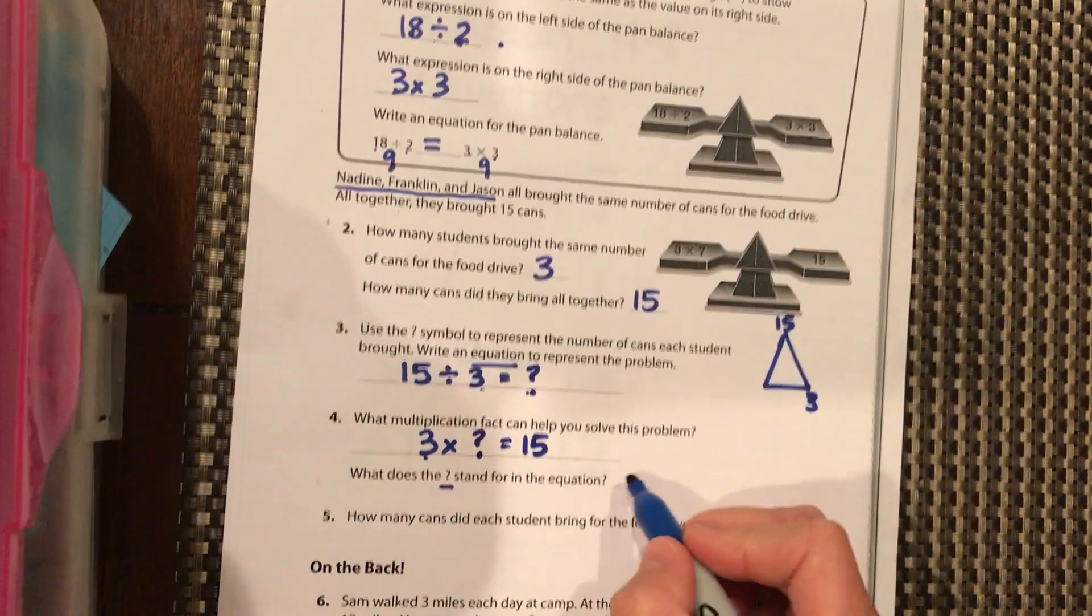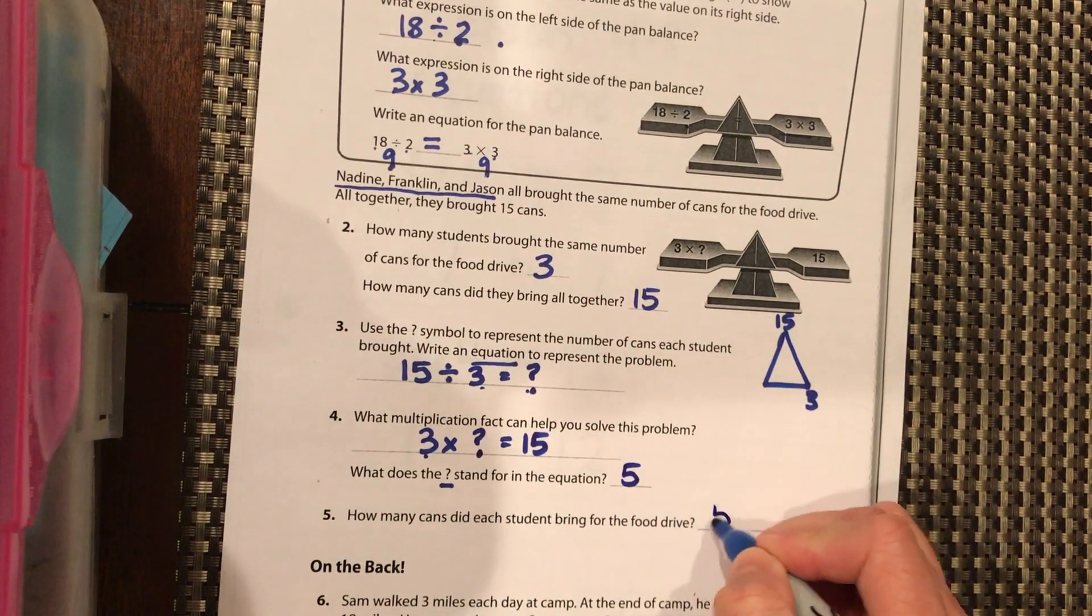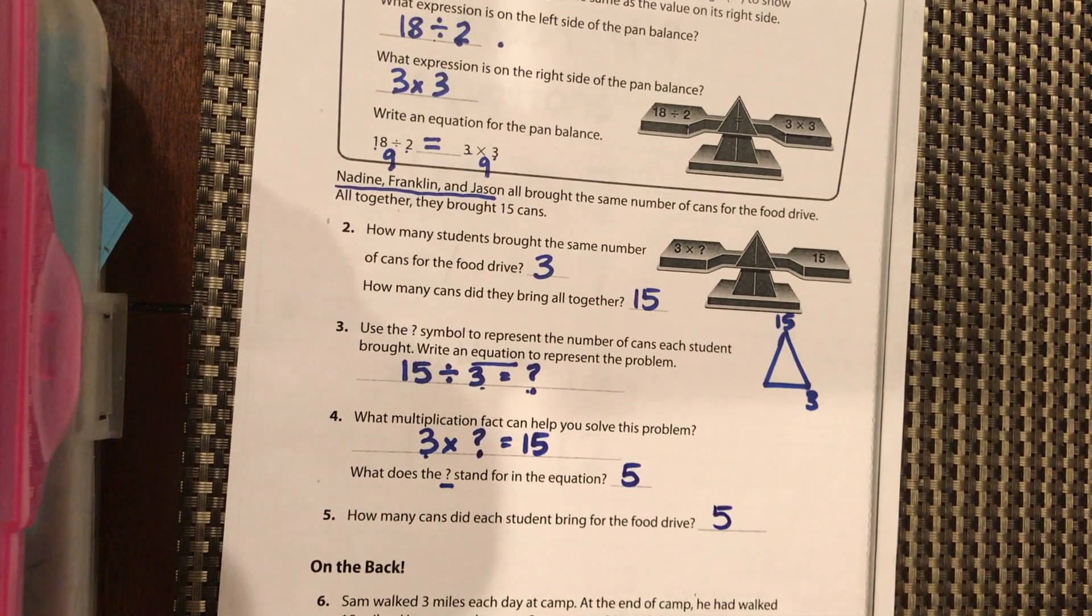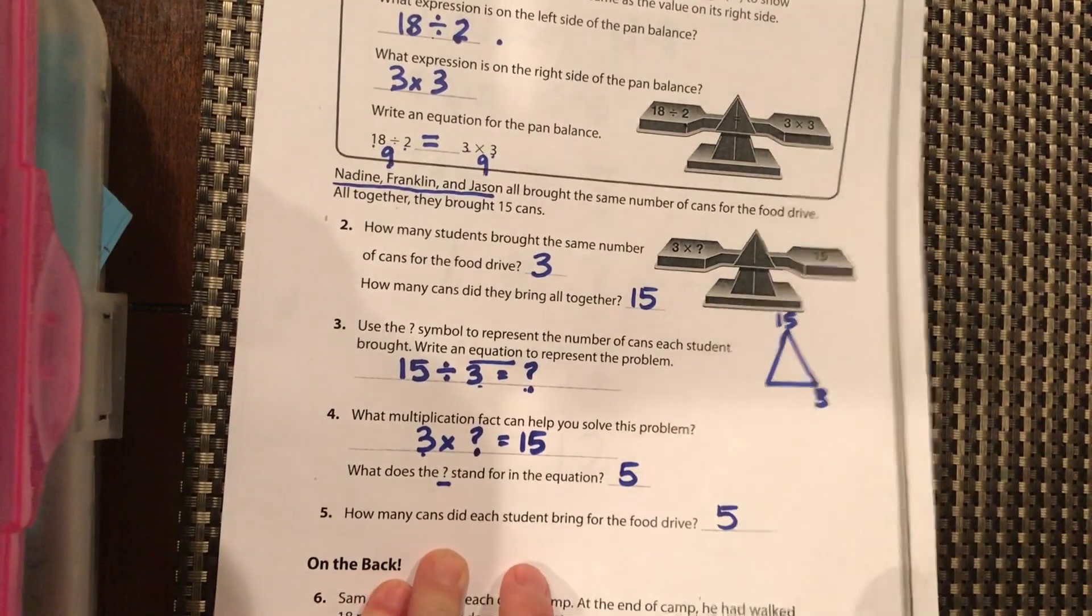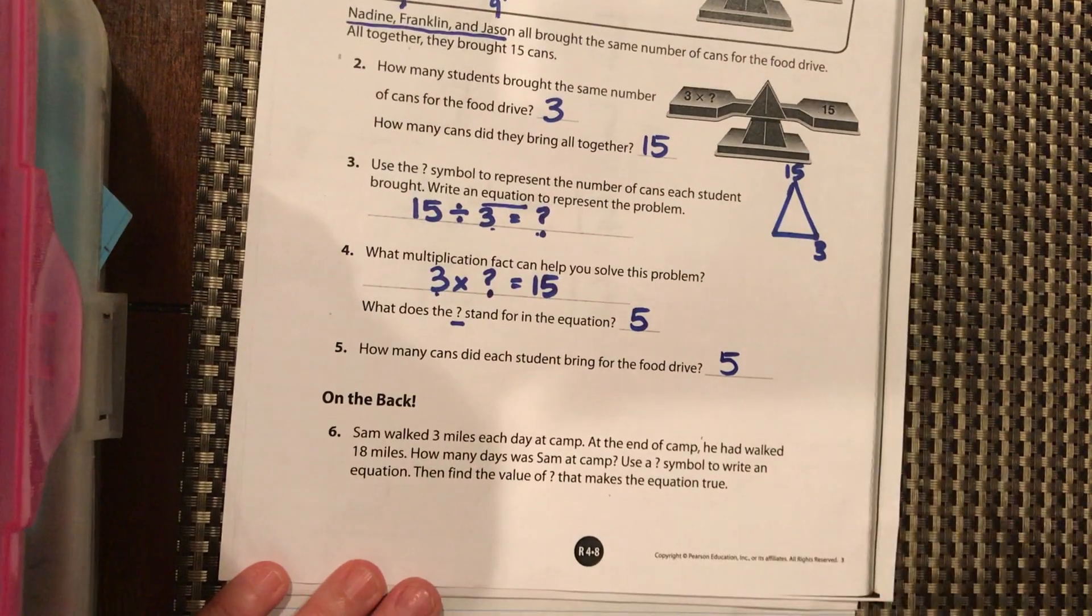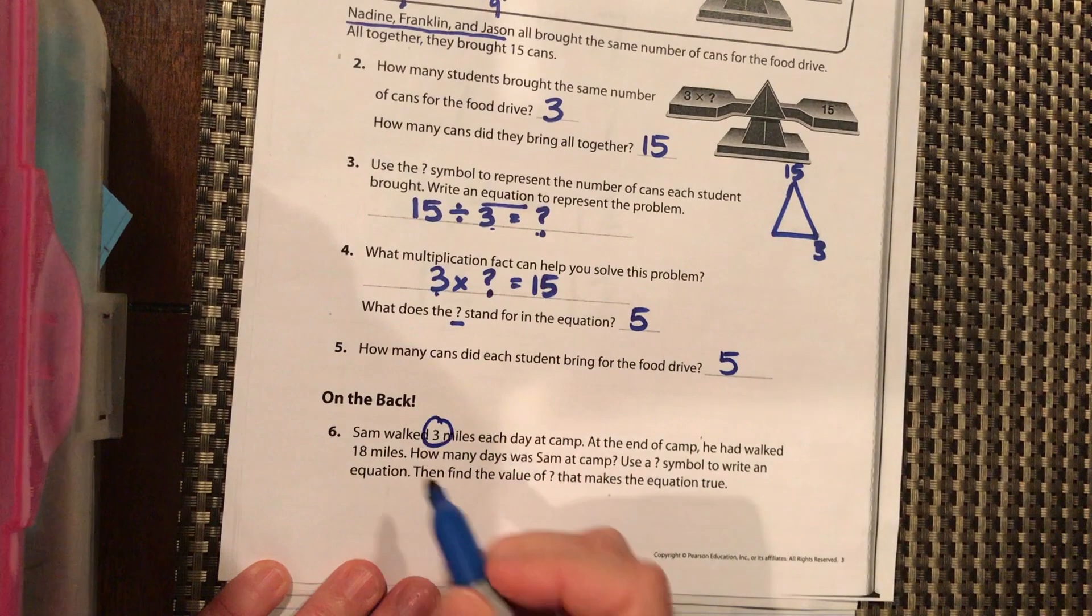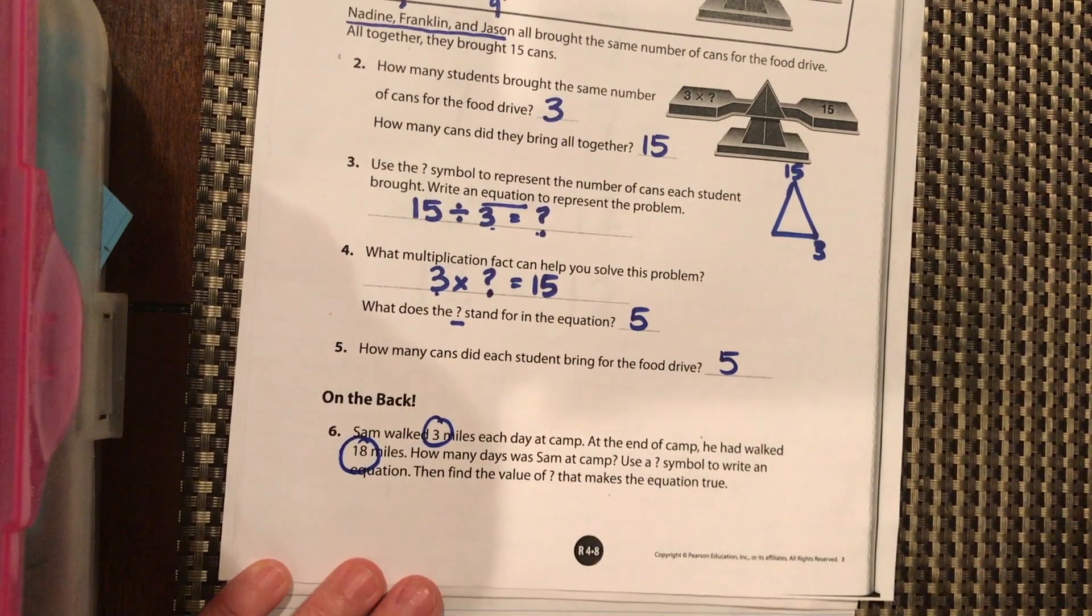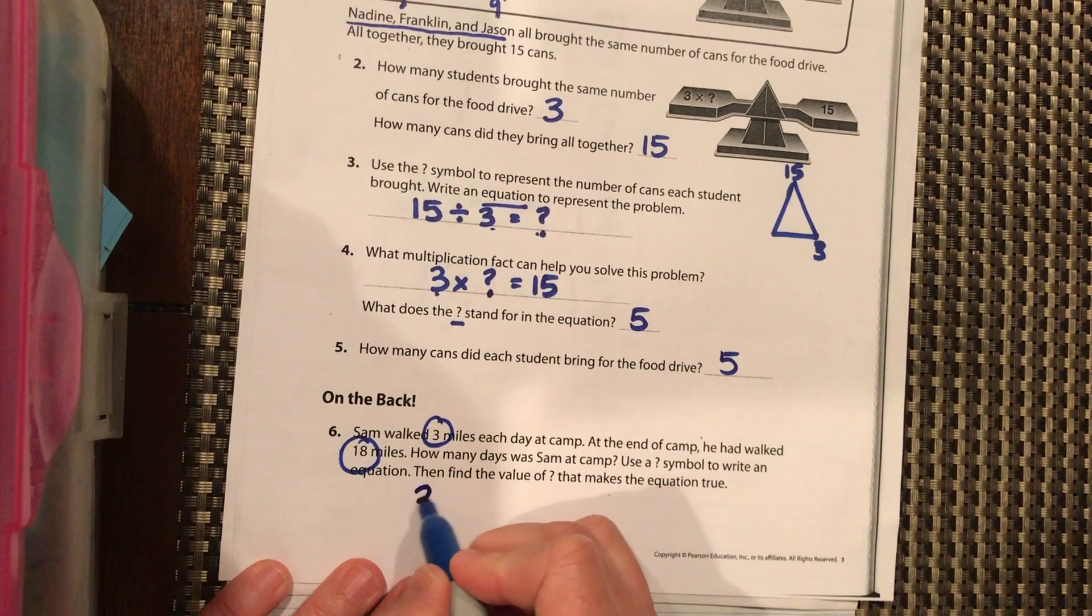All right, on the back. Sam walked three miles each day at camp. At the end of camp he had walked a total of 18 miles. So 3 miles each day, total of 18 miles, and how many days was he at camp?